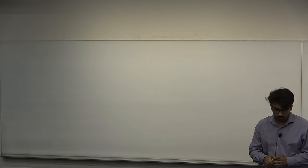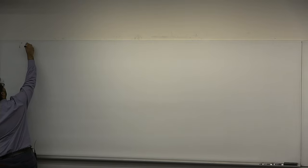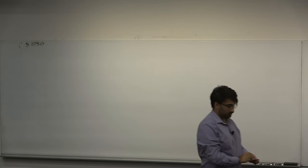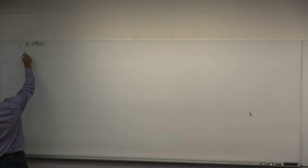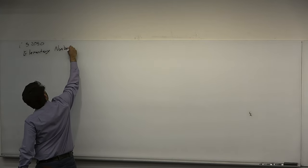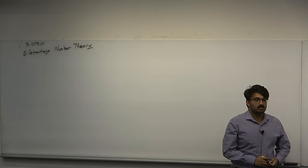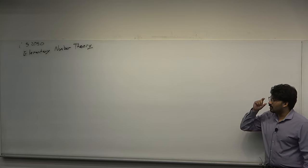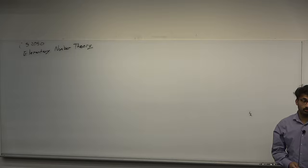Let's begin. Welcome to CS2050. The topic of today is elementary number theory. Number theory is in some sense the queen of mathematics — the oldest branch of mathematics. It's ancient. A lot of the theorems we're going to prove today are from the time of Euclid or older. They're really, really old.